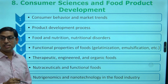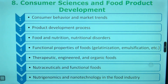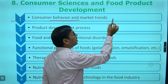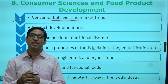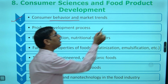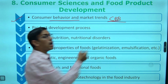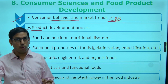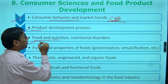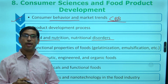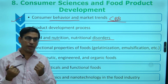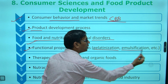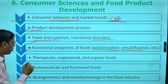The last topic is consumer science and food production. Consumer behavior and market trends — how we can analyze the psychology of the consumer, which is consumer buying behavior — this is part of the updated syllabus. Product development process — starting from idea generation to the product, how a product is actually developed. Food and nutritional aspects — even some nutritional disorders by which we are unable to digest the product. Functional properties of food — gelatinization of starch, emulsification, gel, sol emulsification — all things are there.